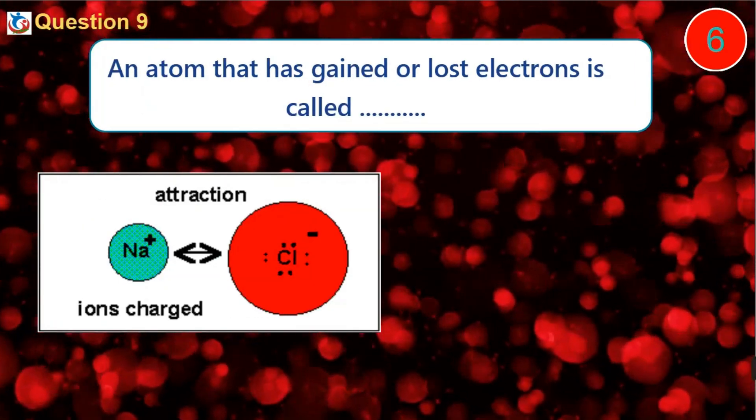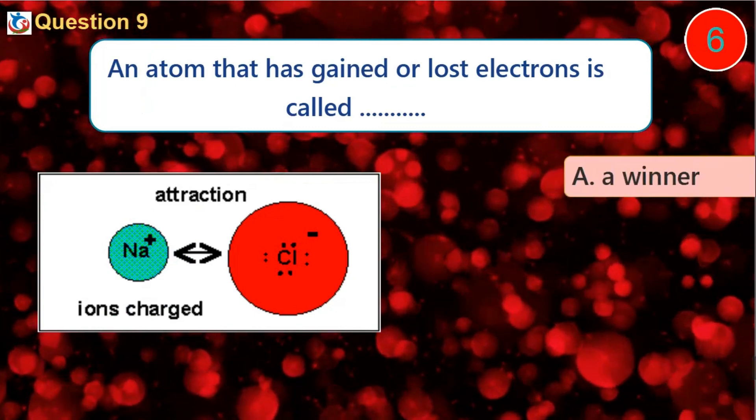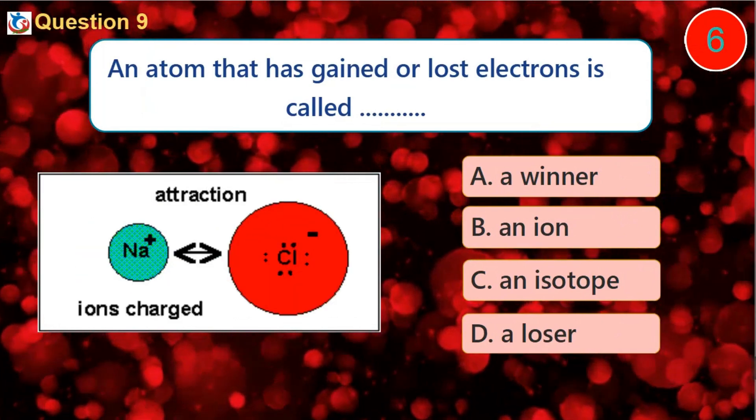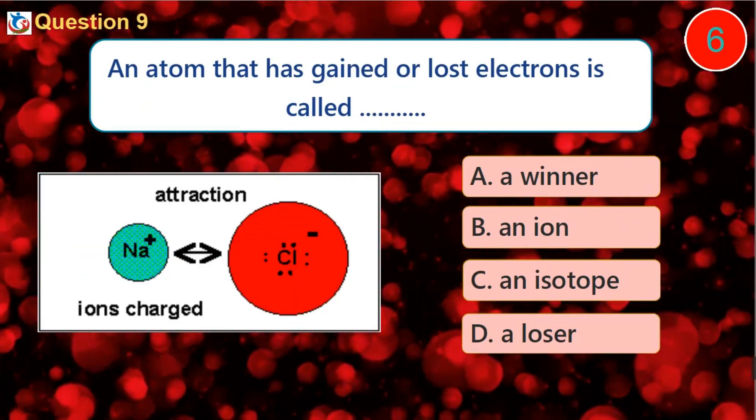Question 9. An atom that has gained or lost electrons is called: A. A winner B. An ion C. An isotope D. A loser